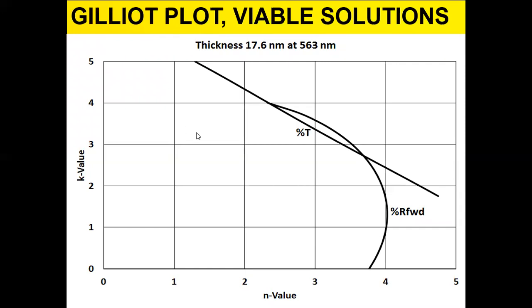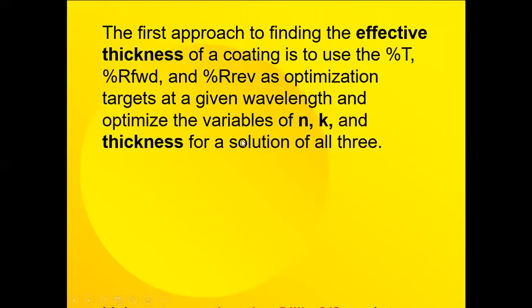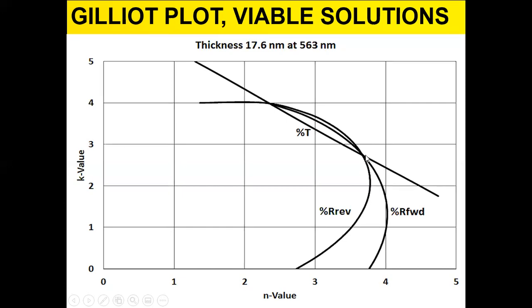Kyo published a paper showing a technique which has been very useful to us, where we generate a table over a range from zero to five in both the N and K values at a given thickness. What N and K values will satisfy a given percent reflection? So we have a T curve which would satisfy the percent transmission measured at a given wavelength, in this case 563 nanometers, and the forward curve shown here. Then if we further take a third curve, the reverse reflection, we'll get curves that look like this. If they intersect at the common point for one point here and another point here, then we have a good solution which satisfies all three spectral curves at that thickness.